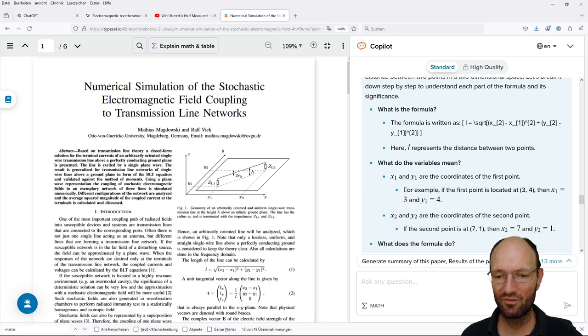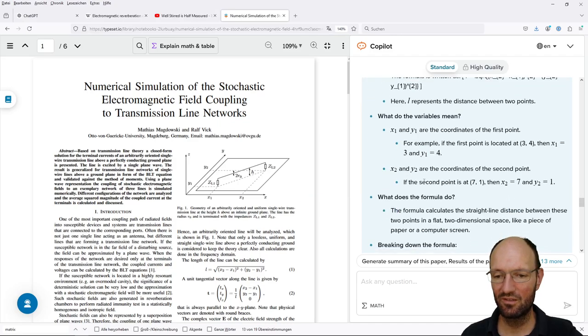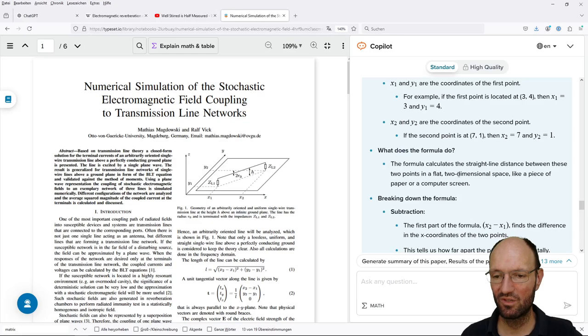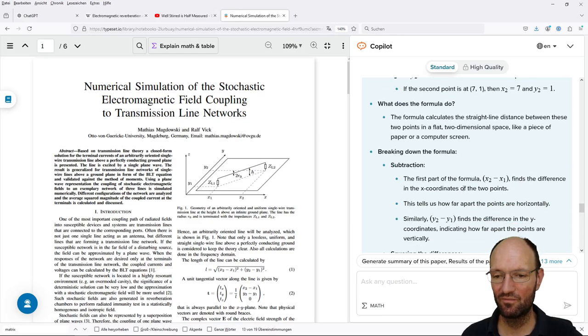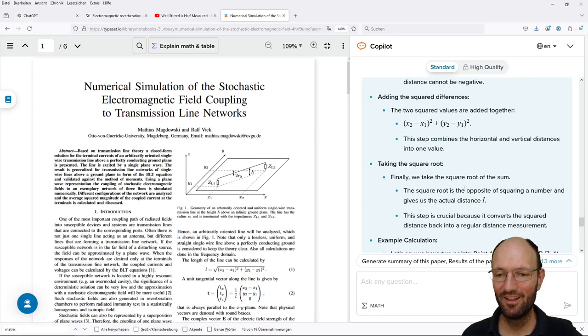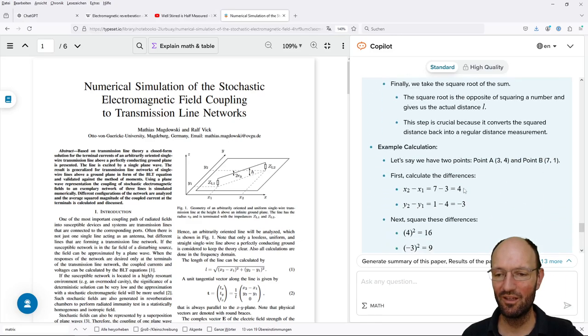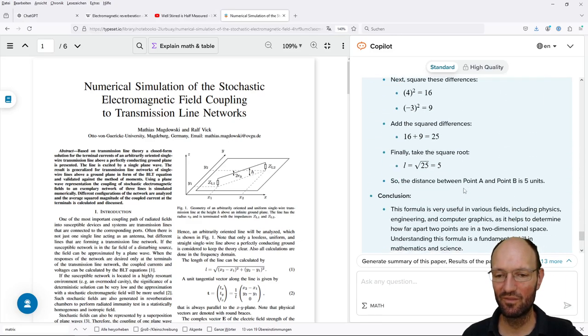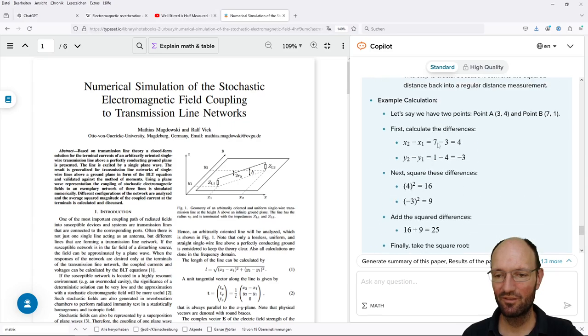Let's break it down. What is the formula? Okay, it repeats the formula. It is the distance between two points, coordinates, straight line distance. Breaking down the formula, squaring the difference. It explains how to calculate this formula, taking the square root.